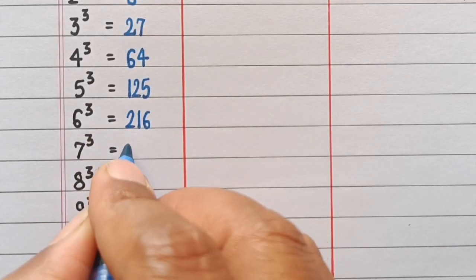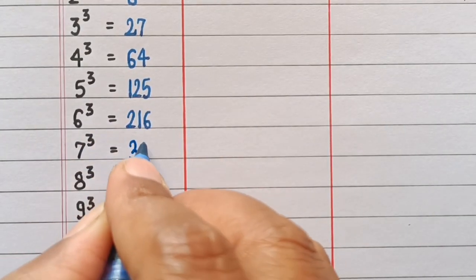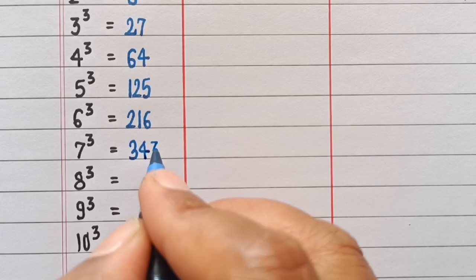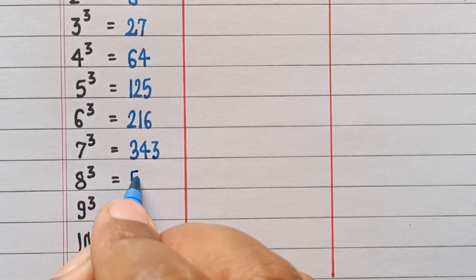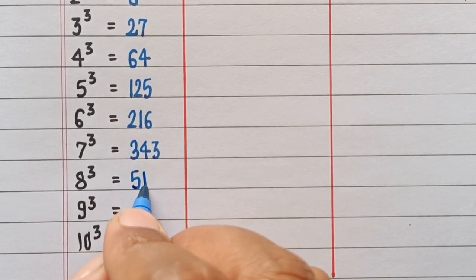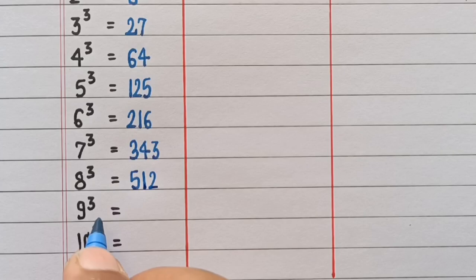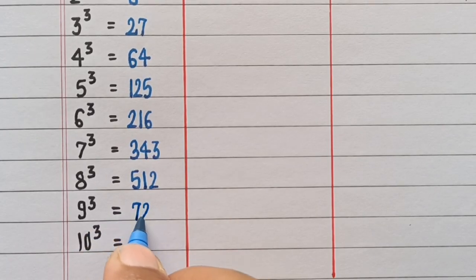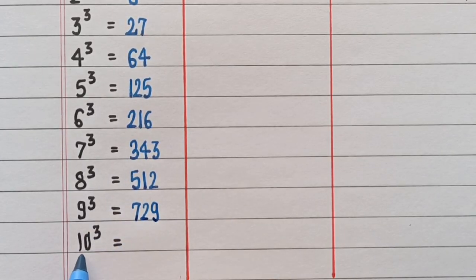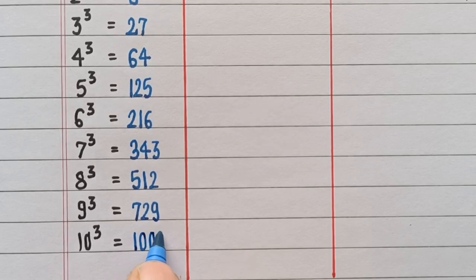Cube of 7 is 343. Cube of 8 is 512. Cube of 9 is 729. Cube of 10 is 1000.